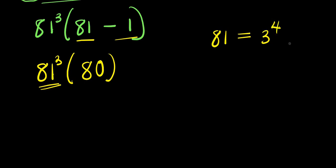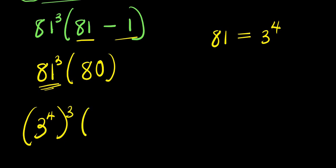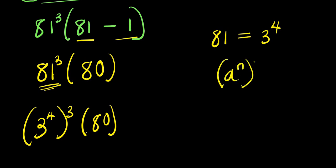So we substitute three to the power of four for eighty-one. We are going to have three to the power of four raised to the power of three, times eighty. And if you have a to the power n raised to the power of n, this equals a to the power n times n.